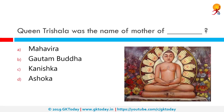Queen Trishala was the name of the mother of whom? The correct answer is Mahavira. Mahavira, also known as Vardhamana, was the 24th Tirthankara of Jainism. In the Jain tradition it is believed that Mahavira was born in the early part of the 6th century BC into a royal Kshatriya family in present-day Bihar, India.